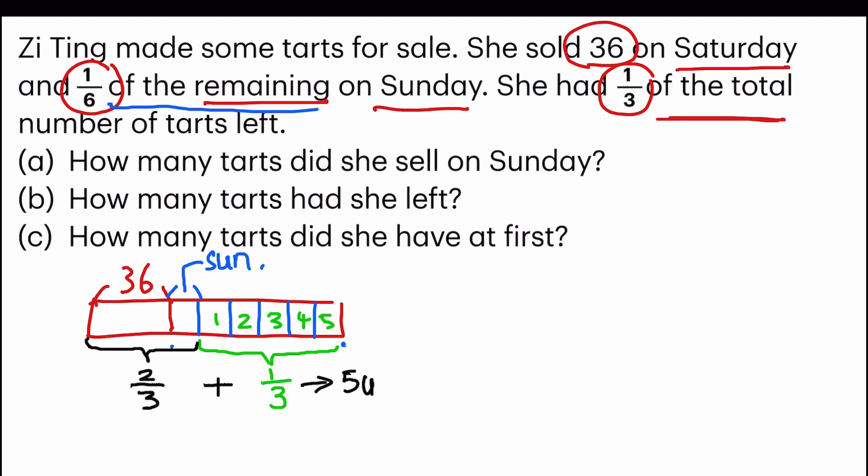So if one-third equates to five units, two-thirds equates to how many units? Five times two equals ten units. Okay, now let's observe this part of the model. This equals ten units and these are these tiny little one units here. So I need to deal with this 36. I need to infer how many units this 36 refers to.